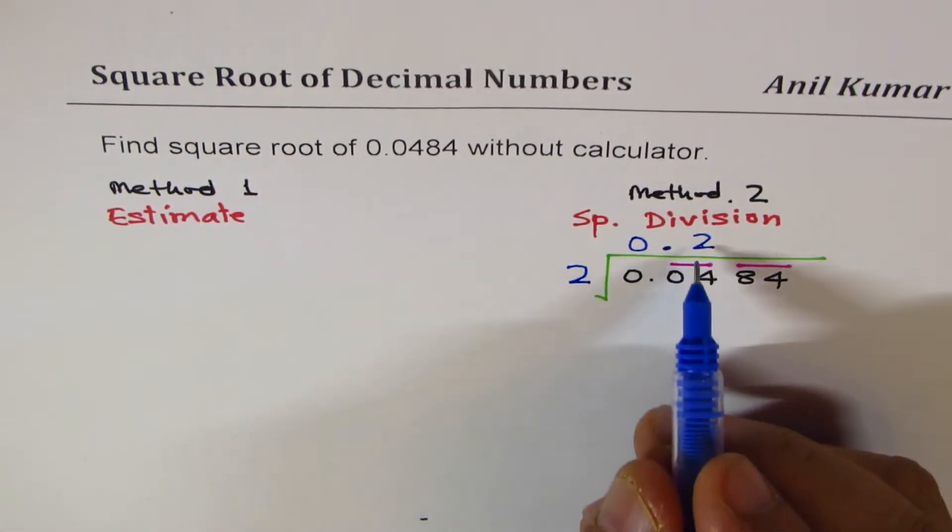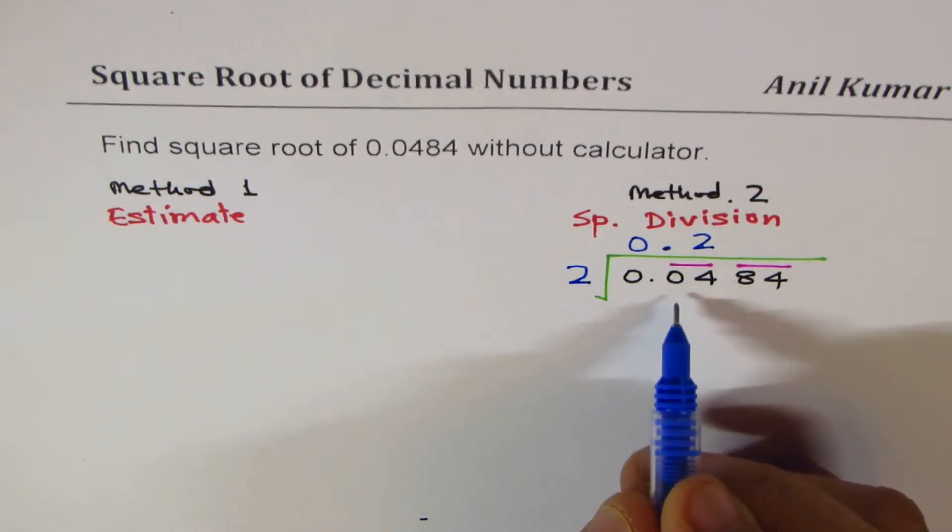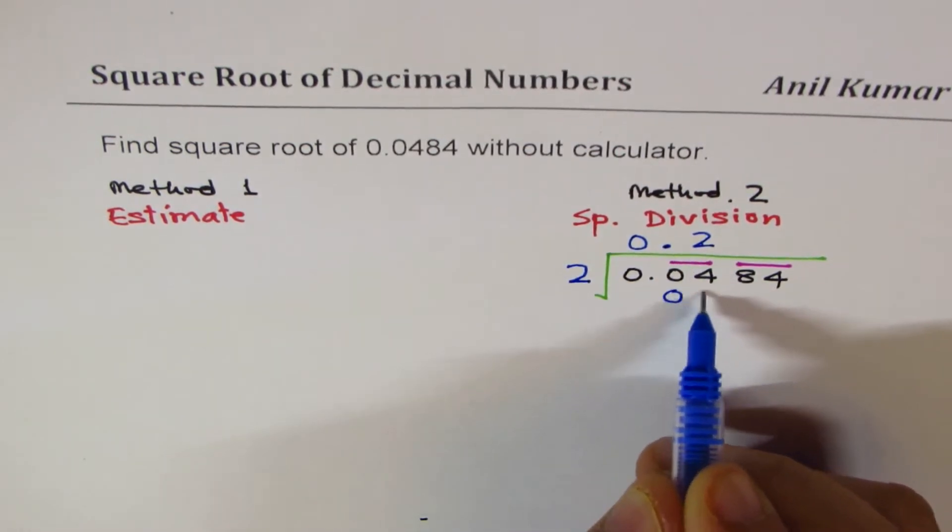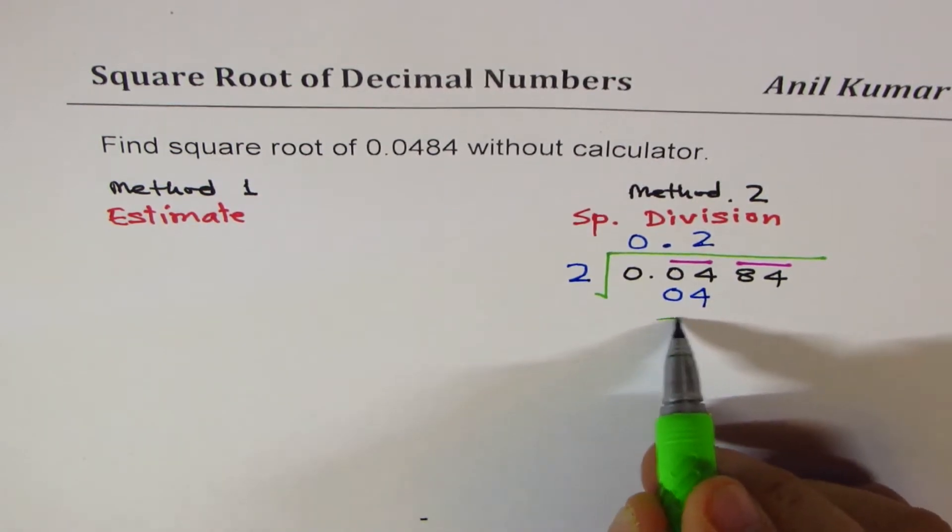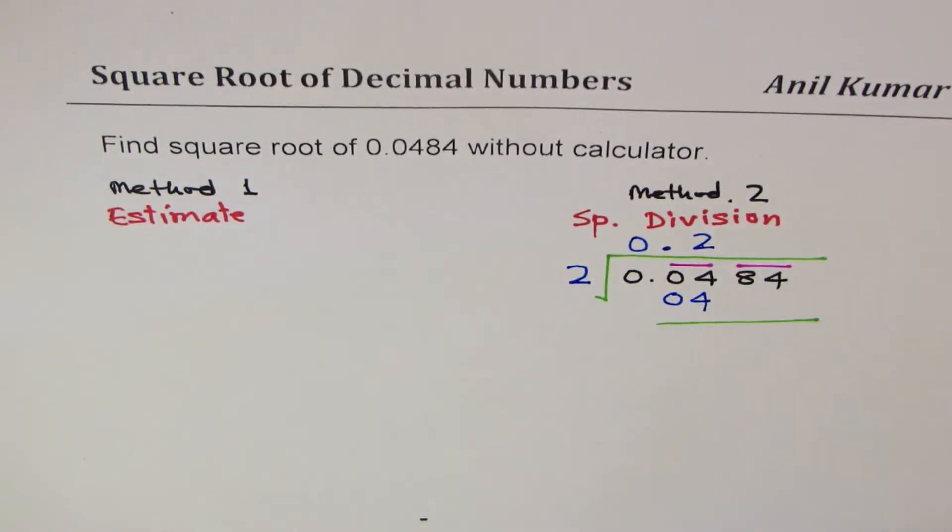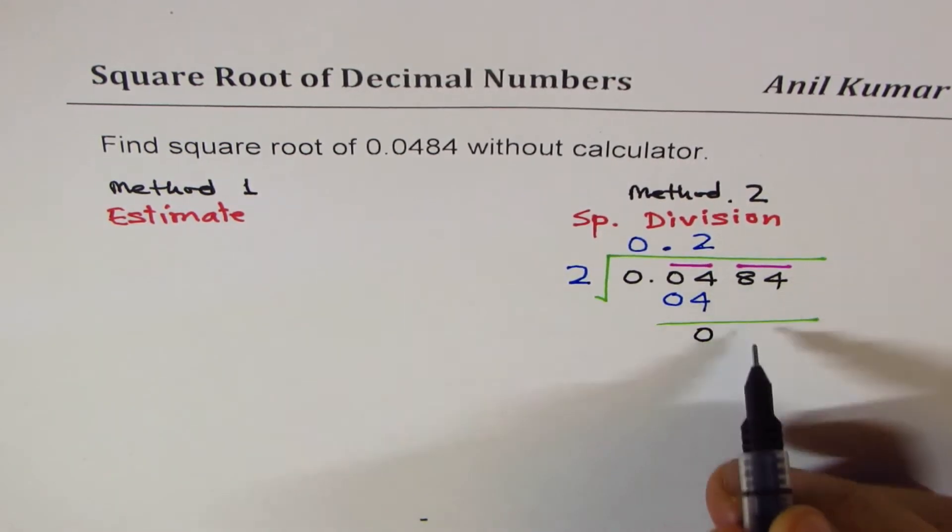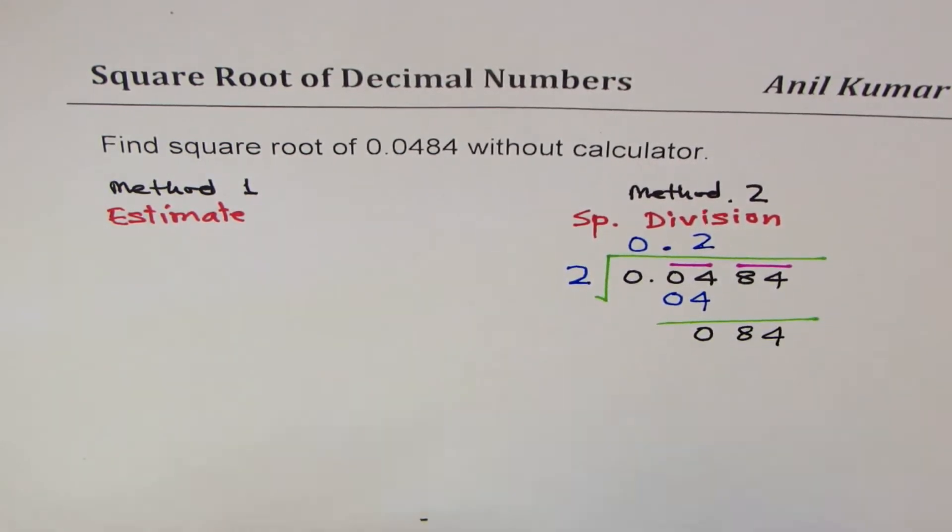The number is 2. We'll write 2 as a divisor and also in the quotient part. 2 times 2 is 4, so we'll write the number 4 underneath as we do in division. We'll take away, bring down the other numbers which are 84.